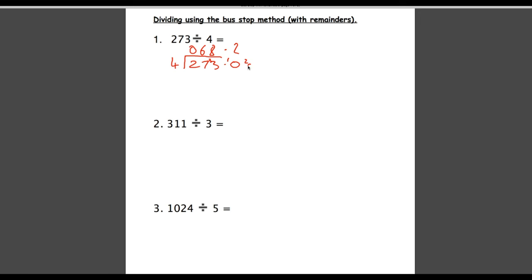Remainder 2. And we do the same thing again. We put another 0. How many 4s go into 20? That answer is 5. And we haven't got anything left so that's our final answer, 68.25. Now they don't always end nicely like that. Sometimes they're recurring so we just stop when we feel like we've got to a reasonable answer.